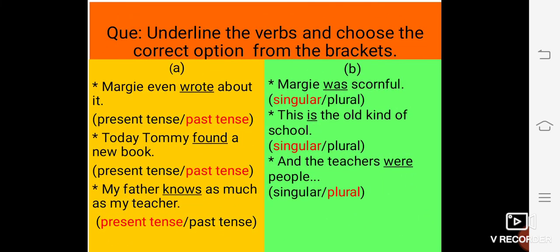The next question, underline the verb and choose the correct option from the brackets. Here, in A section, Margie even wrote about it. In this sentence, the verb is wrote. And you have to choose whether it is present tense or past tense from the bracket given. So, the underlined verb that is wrote, and it belongs to past tense.